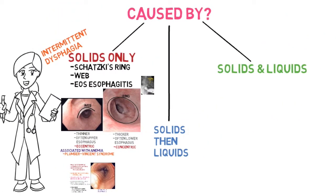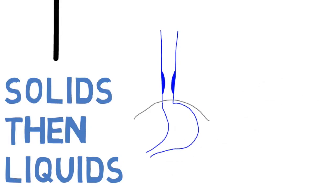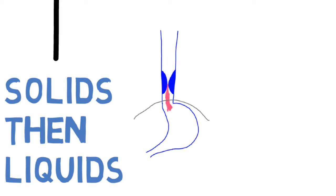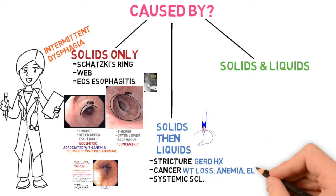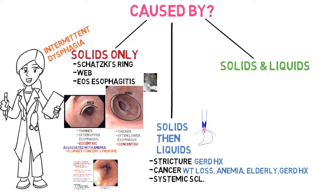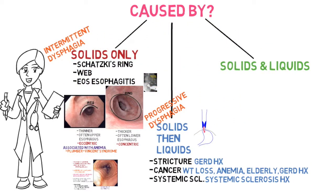For solids only, we're looking for intermittent dysphagia. Now let's look at solids then liquids — we're talking stricture, cancer, and systemic sclerosis. The esophagus narrows slowly; liquids can still make their way down, but solids have a more difficult time and get stuck first. As it progresses, liquids eventually also have difficulty. If there's a GERD history, think stricture; weight loss, anemia, elderly patient, or GERD history, think cancer; systemic sclerosis history, think systemic sclerosis. This is usually more progressive dysphagia.